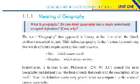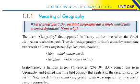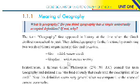The term geography first appeared in history at the time of Greek civilization. In Greek, the term geography is formed by combining two words of Greek origin: 'geo,' which means earth, and 'graphia,' which means writing.